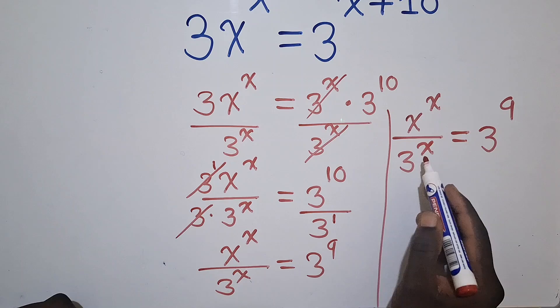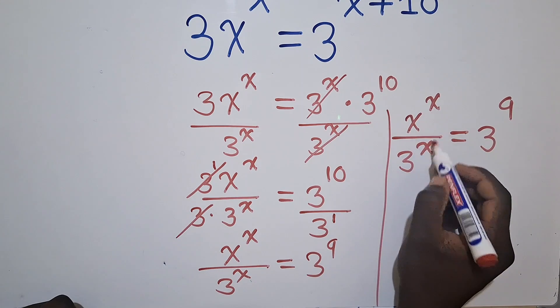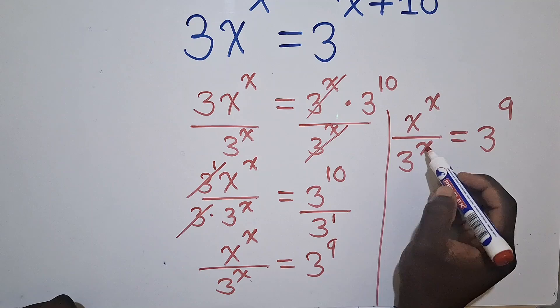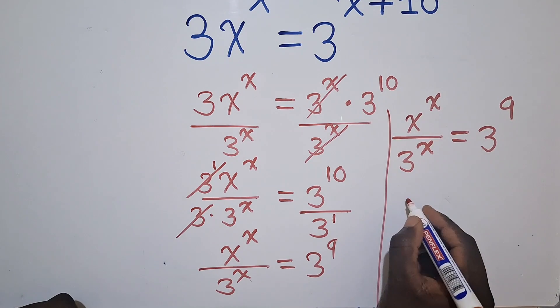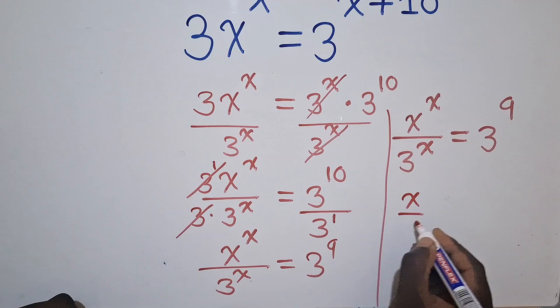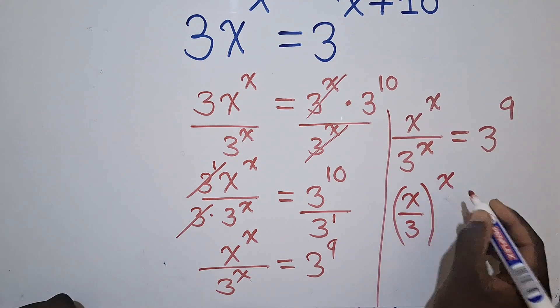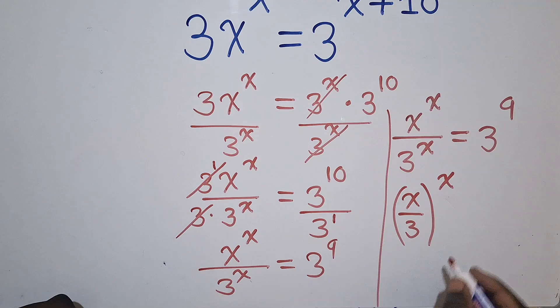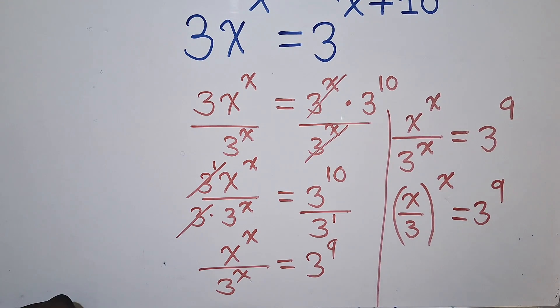So now from this stage, there is a law which says that when you've got a common power, so you can see the power which is here and here are the same. So we can write this as X over 3, and then we bring the power right here. This X is common. Then we just say equal to 3 power 9.